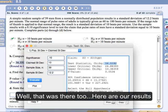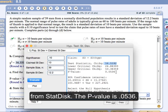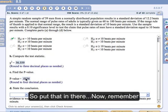And then it says find the p-value. Well, that was there too. Here's our results from StatDisk. The p-value is 0.0536. So we put that in there and we got our p-value.